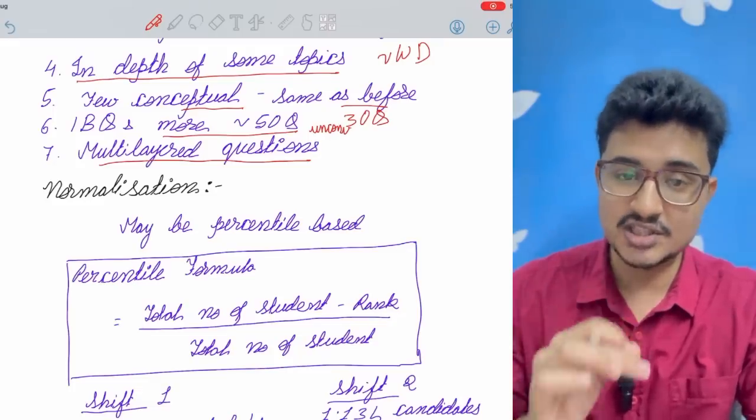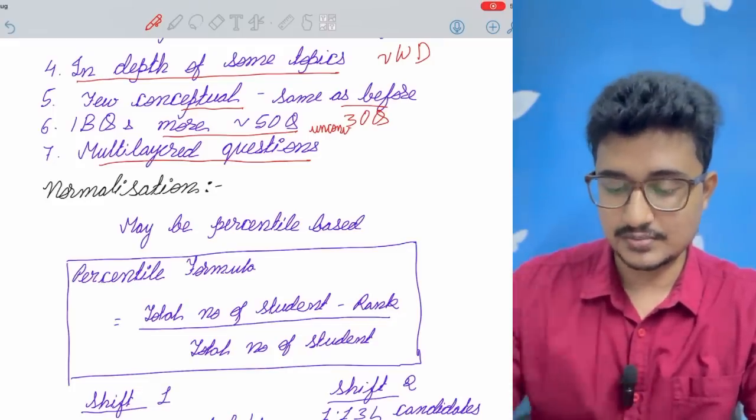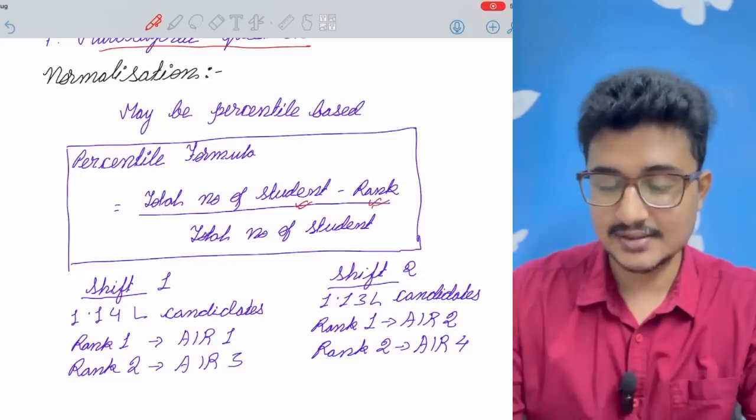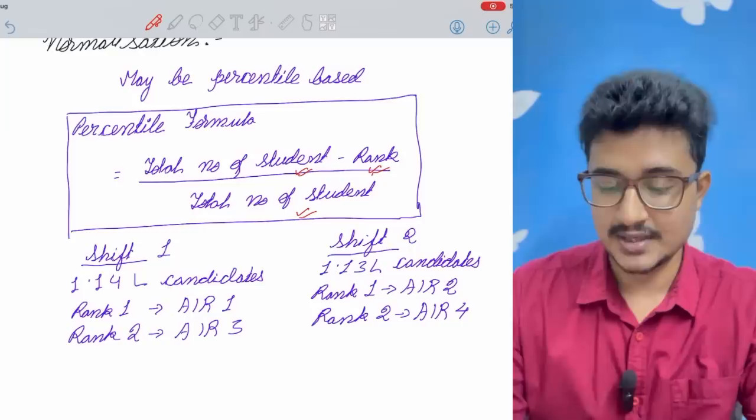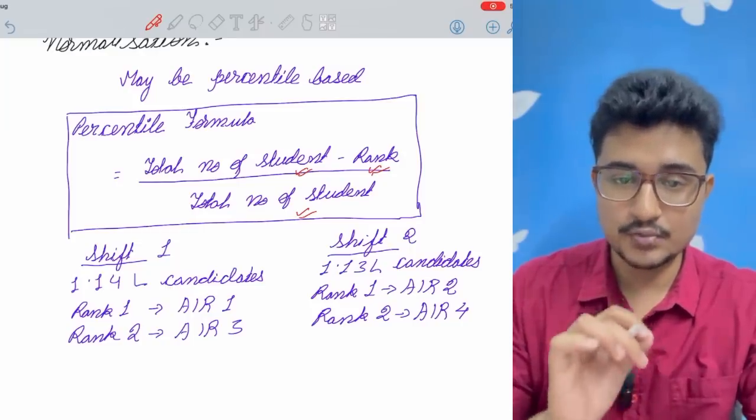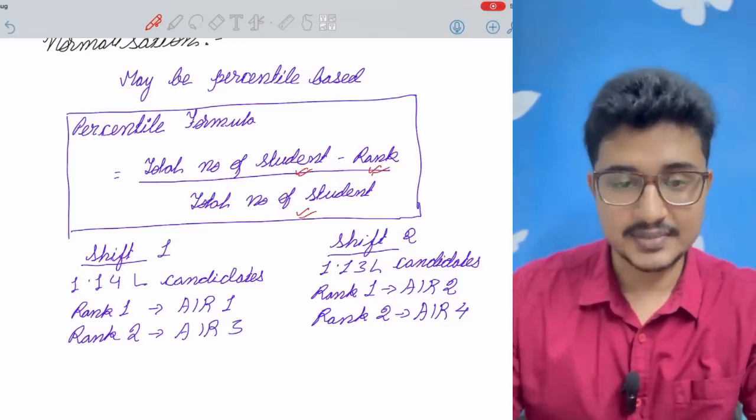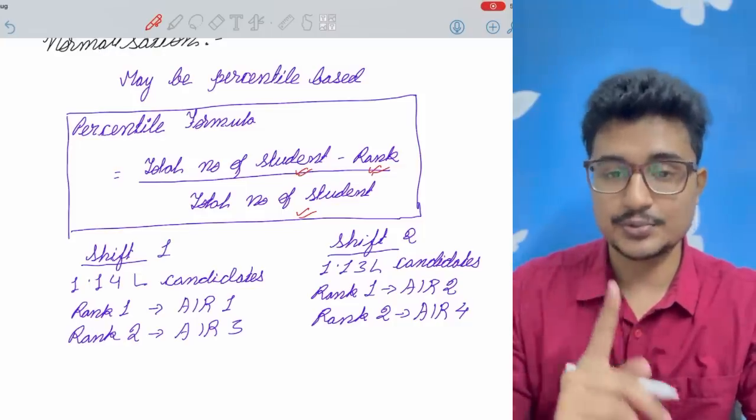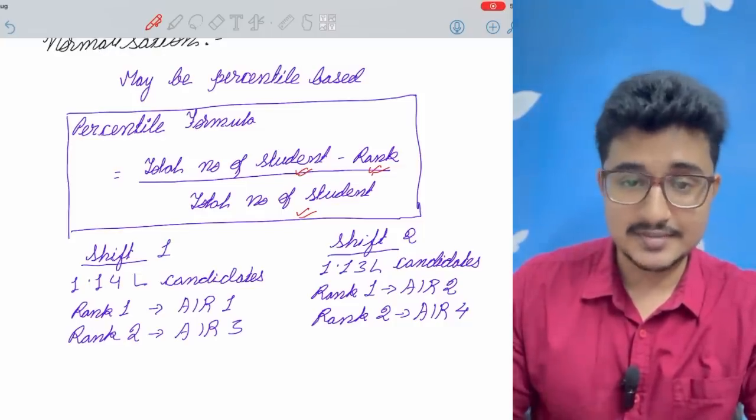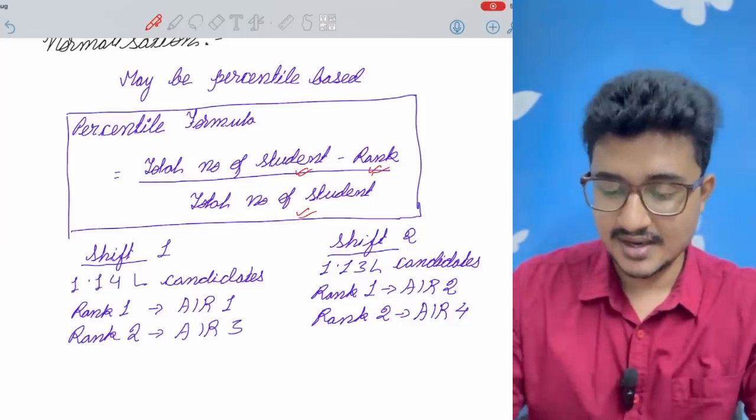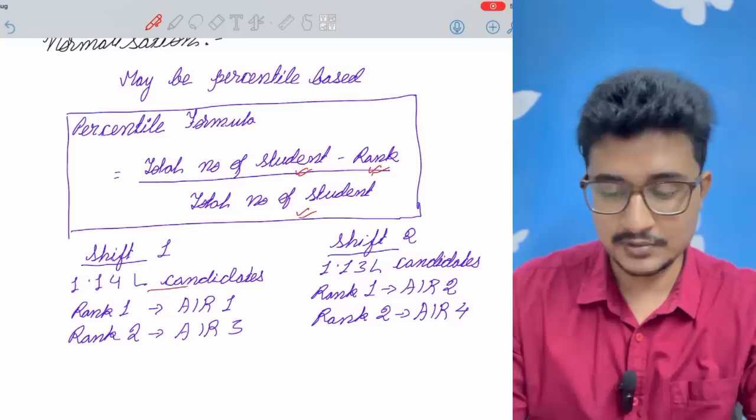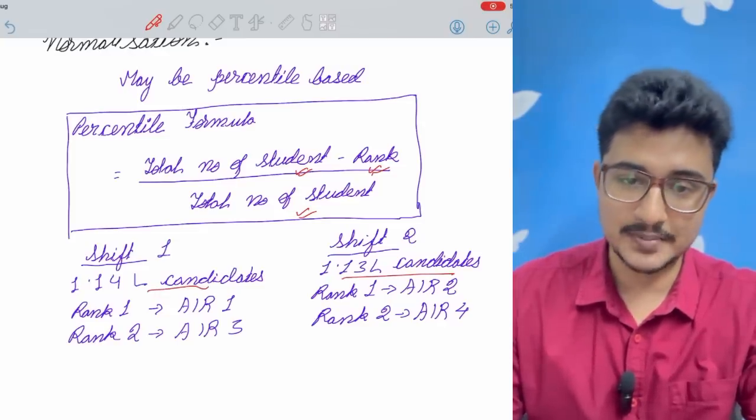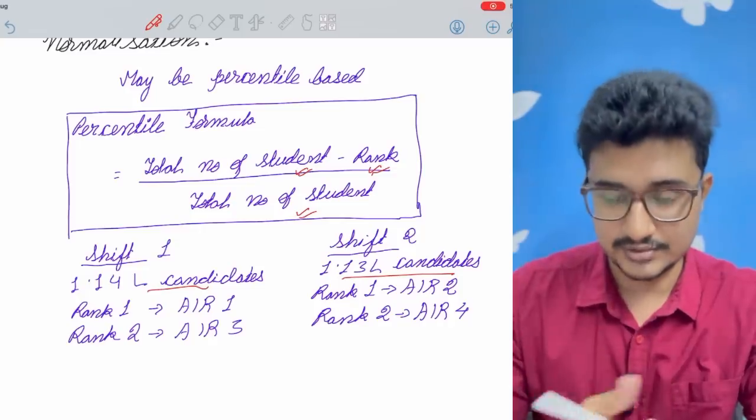Percentile formula is that the total number of students minus the rank the individual got divided by the total number of students. In both the shifts there were 1.14 lakh applicants but how many candidates sat on the exam that is the important determining factor. I take shift number one to have 1.14 lakh candidates and shift two to have 1.13 lakh candidates those who have appeared. This could be reversed also, this is just an example.